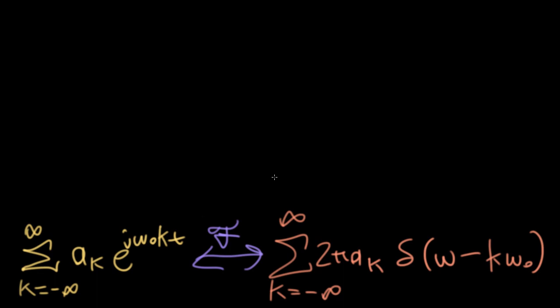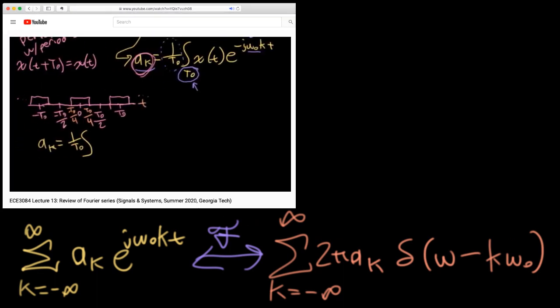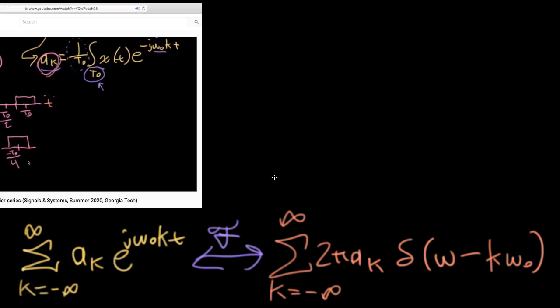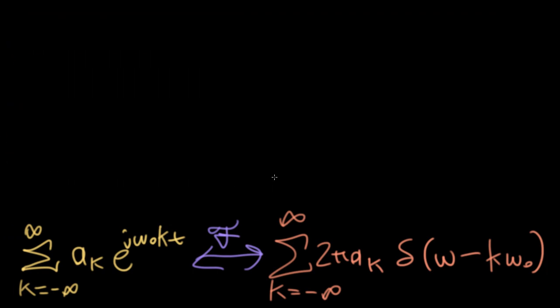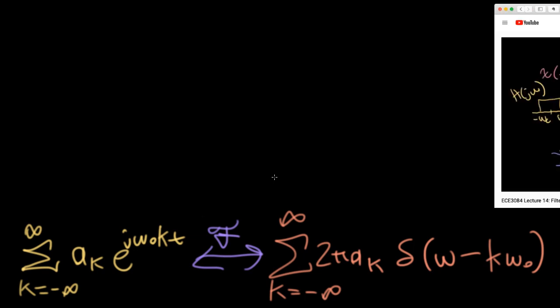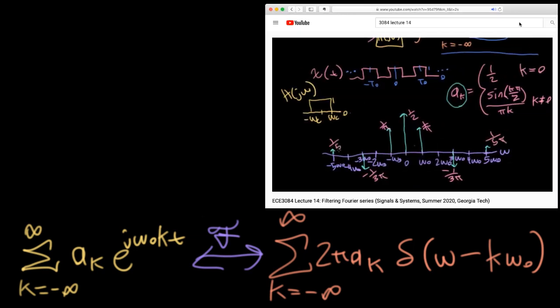So let's do an example. If we go to our YouTubes and look back at lecture 13, we computed the Fourier series coefficients of a square wave that went between 0 and 1 that was centered around the origin. We used this as an example in lecture 14.